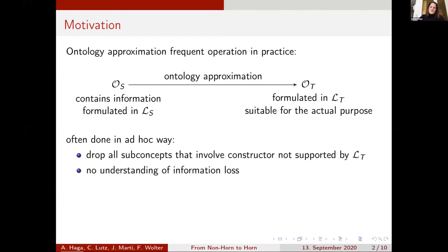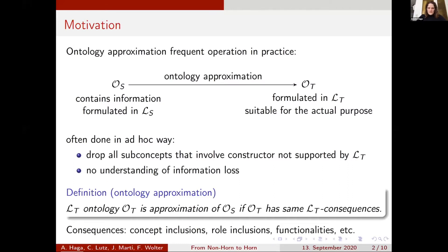So when we say ontology approximation, we mean roughly something like this: a target ontology OT, formulated in target language LT, is an approximation of our source ontology if the target ontology has the same LT consequences as the source ontology. LT consequences mean things like concept inclusions, role inclusions, or whatever else is expressible in our chosen target language.